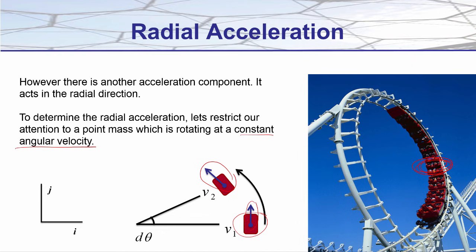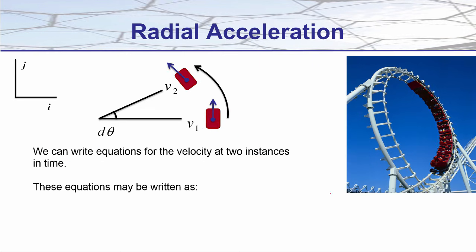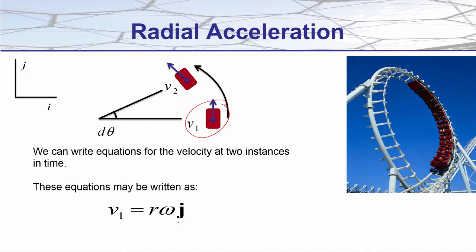As this car moves from one position to the next, even if it's going at a constant magnitude of velocity, the direction of the velocity is going to change. As it moves along, it's changing by a small angle, because we're looking at just a small amount of time. For my coordinate system, we're going to be looking at some vector calculus. We can write out our equations for the velocity at two instances in time. The initial velocity has only a component in the j direction, and from the previous video, velocity equals radius multiplied by angular velocity.